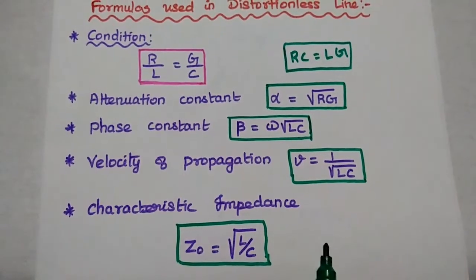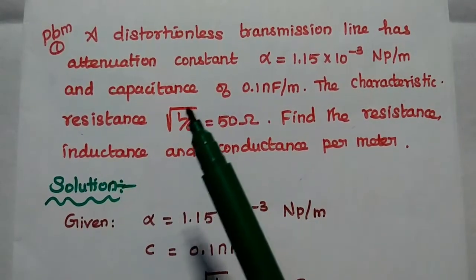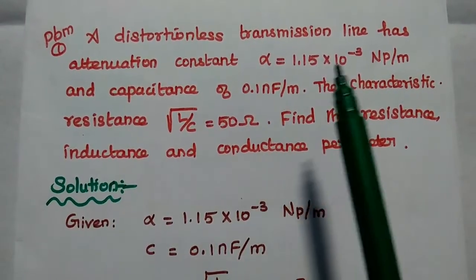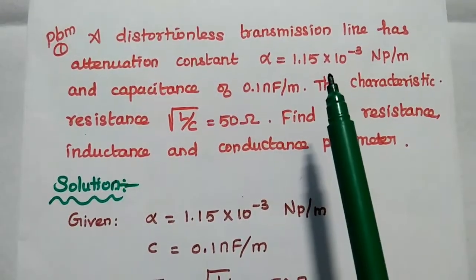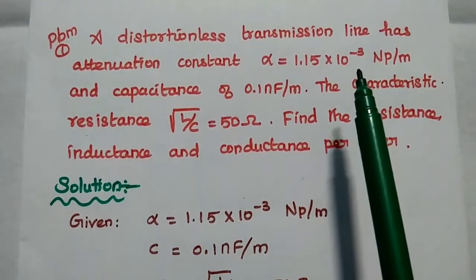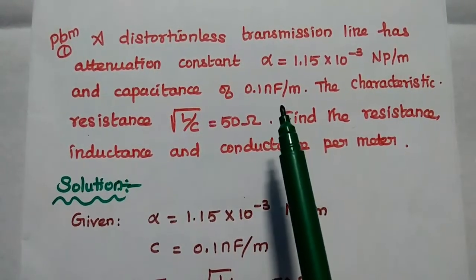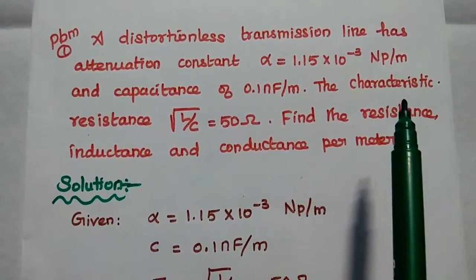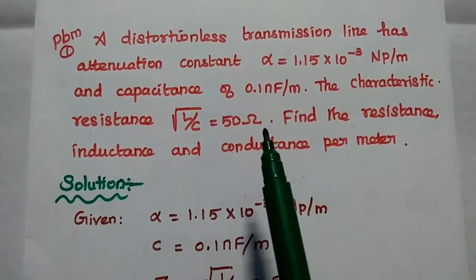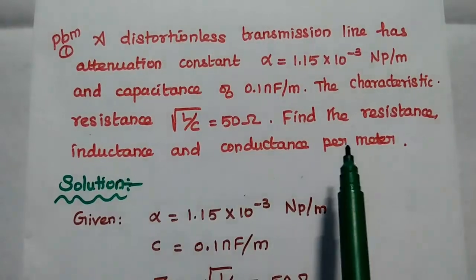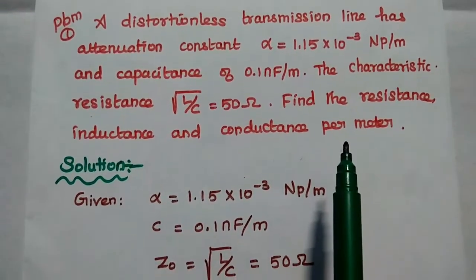So those are the formulas used in distortionless line. The first problem: a distortionless transmission line has attenuation constant alpha equal to 1.15 × 10⁻³ neper per meter and capacitance of 0.1 nanofarad per meter. The characteristic impedance Z0, that is square root of L by C, is equal to 50 ohm. Find the resistance, inductance, and conductance per meter.